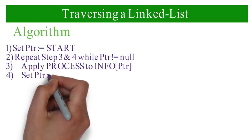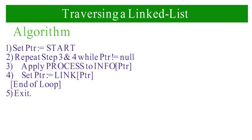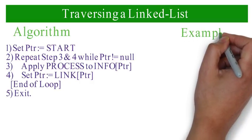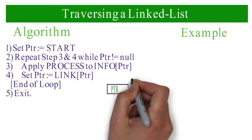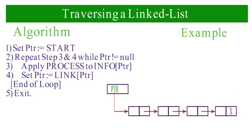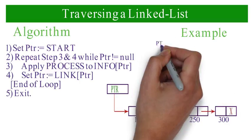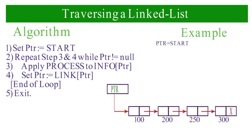Traversing a linked list: Let LIST be a linked list in memory. This algorithm traverses the list applying an operation PROCESS to each element. The variable PTR points to the node currently being processed. For example, PTR holds memory address 100. At address 100, it stores value 2. It processes INFO[PTR] which is 2, and then PTR is assigned 200.